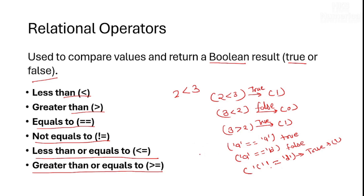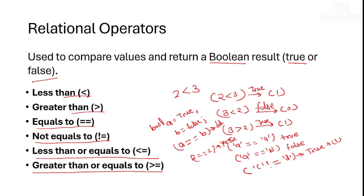Instead of characters, you can use numbers too — for example, is 2 equal to 2? Yes. You can also check boolean values. If we make boolean variable a equal to true and variable b equal to false, then is a equal to b? That will return false. Similarly, is 2 less than or equal to 3? True. Is 3 less than or equal to 4? True.